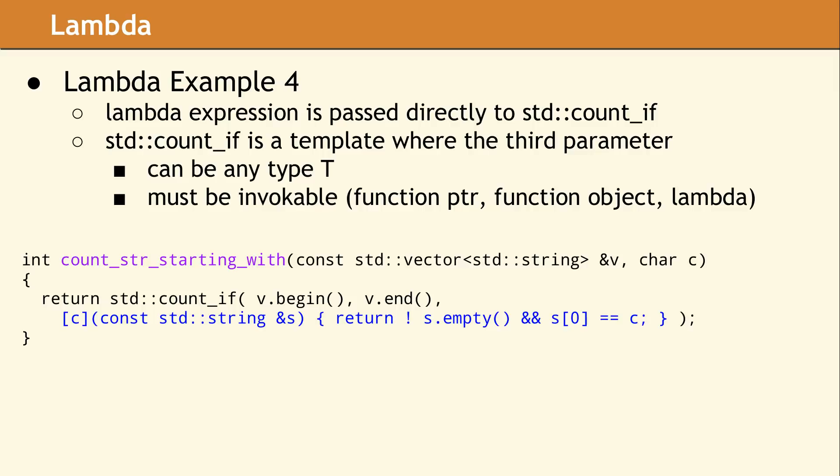In this example, the lambda expression is being passed directly to the std::count_if algorithm. The third parameter to count_if is required and must be something which is invocable or callable. This could be a function pointer, a function object, or a lambda. count_if will invoke our lambda expression once for every element in the vector and count how many times this lambda returns true. Using a lambda expression in this way adds functionality to many of the algorithms and comparison functions which have existed in the C++ standard since C++98.